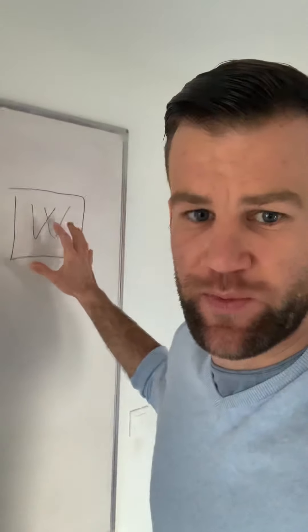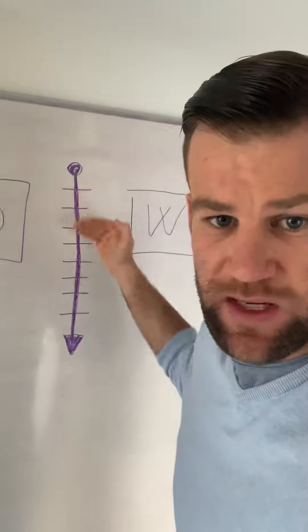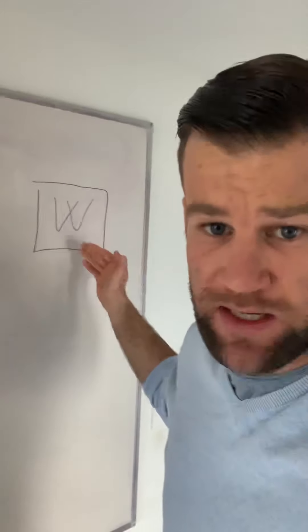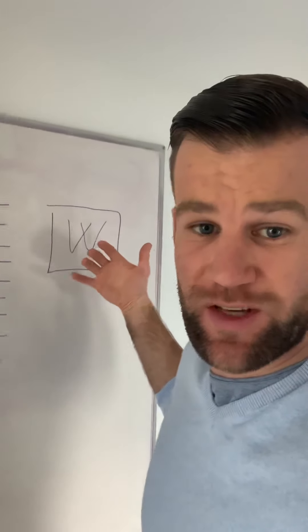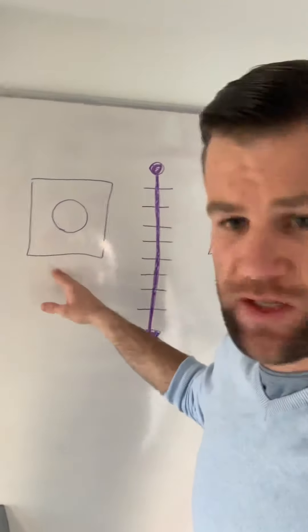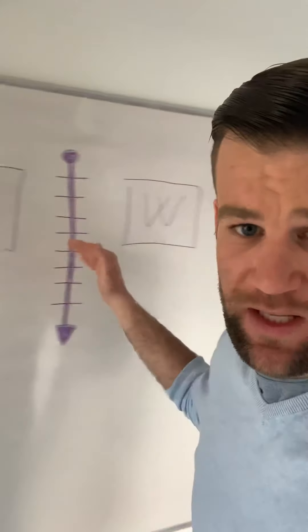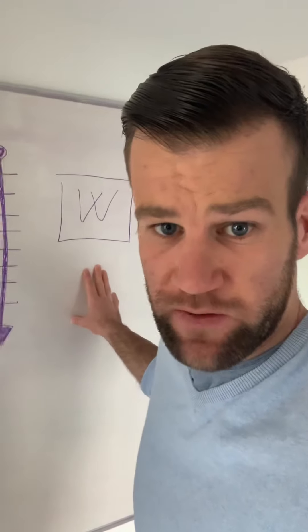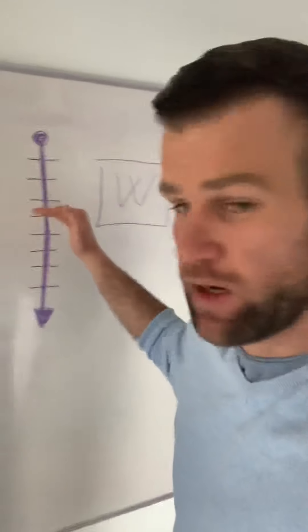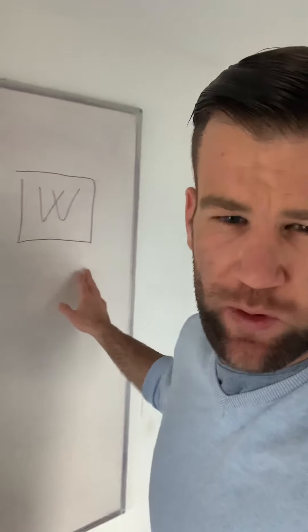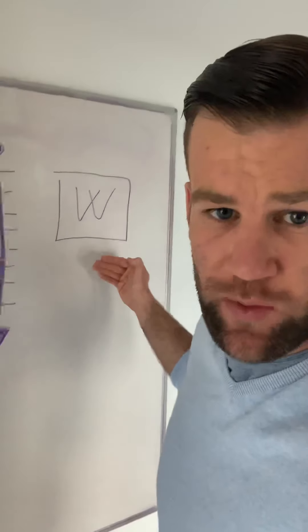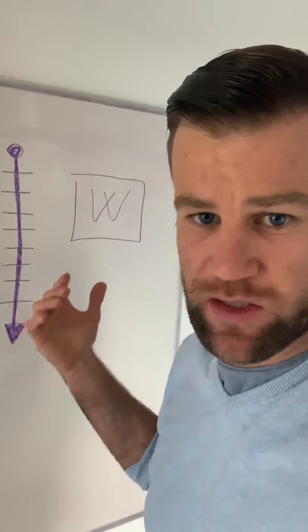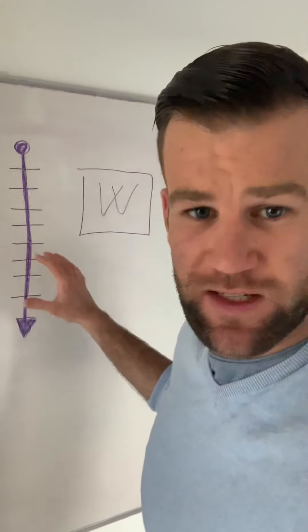The second element is 'W,' which stands for Workbook. You're going to need your course workbook created, because it delivers the steps to your clients — it contains knowledge, tasks, and information. This is distinct from the offer presentation; the workbook is what you use to work with your clients step by step. It could be PowerPoint slides, but a workbook is preferable so people can always reference and read it.